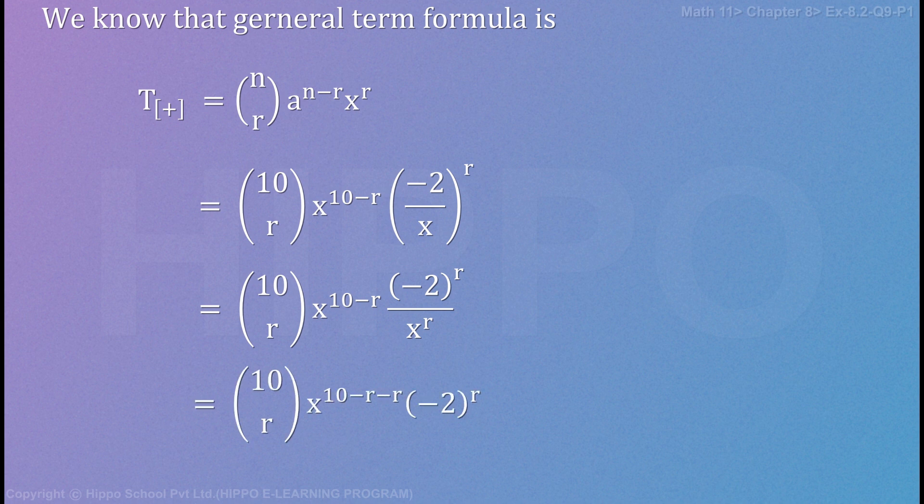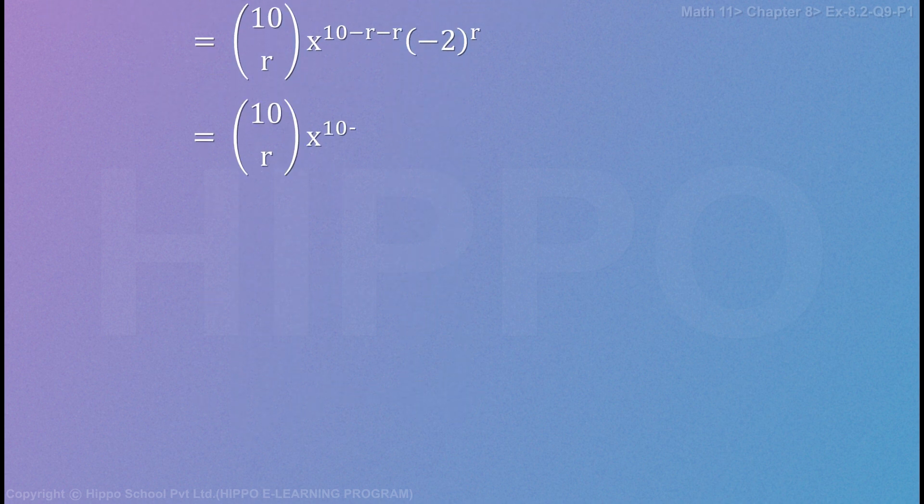Equals to 10Cr x ki power 10 minus r. X ki power r hai na, yeh bhi upper ja ke jab multiplier hooghi, to power upper ja ke minus mei change hojati hai. Toh minus r saad minus 2 ki power r, which is equal to 10Cr x ki power 10 minus r minus r kitna hoa minus 2r, and minus 2 ki power r, which is equation number 1.